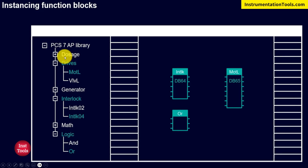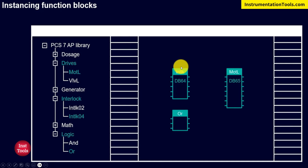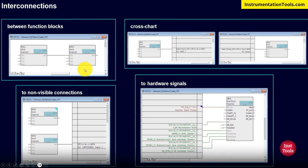In the Catalog, the PCS7 APL library has different classes where FB blocks are already configured. These are type blocks. We instantiate them by dragging and dropping into the CFC plane area — they are instantiated and automatically allocated with DB memory. Whenever we drag and drop an FB, it is considered an instance and is automatically assigned a DB or memory area.